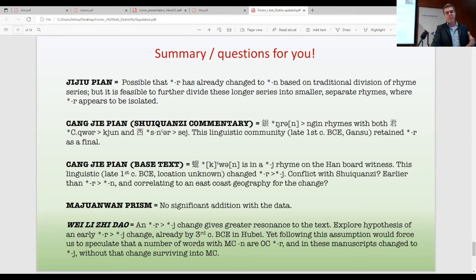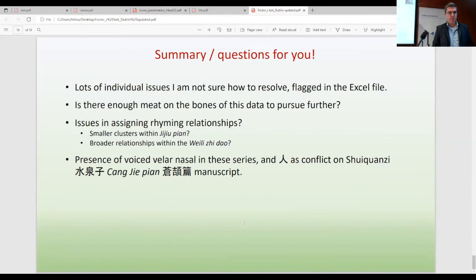If we look at the Cang Jie Pian base text, however, there's some suggestion of a possible -n final in a -j rhyme series, which might suggest then that *-r had been changed to -j already for the base text by linguistic community in an unknown location around the late first century BCE. However, there is that conflict that I pointed out where we still have a rhyme that incorporated ren, which is the voiced velar nasal. And so I'm not sure how to handle that. Majiawan knows the definite addition. But then with the Wei Li Jerdao, it again, there seems to be a suggestion of an *-r to -j change that happened very early in third century BCE.